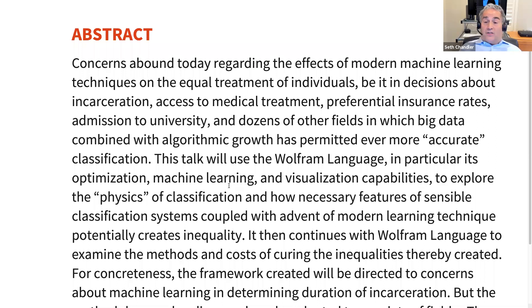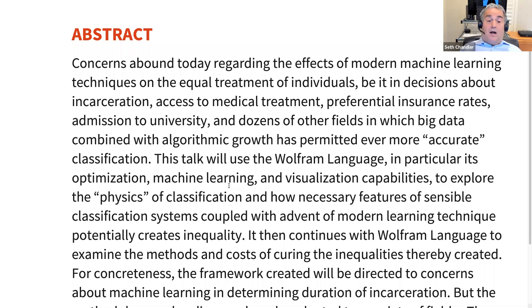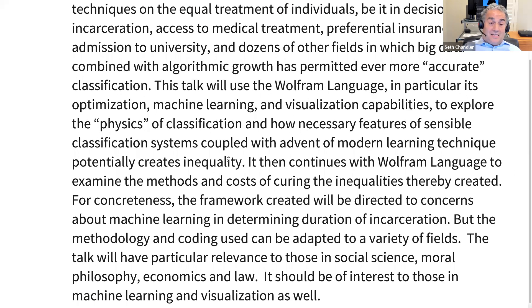We see decisions being made or influenced by machines with respect to incarceration, admission to university — that was a big topic in the UK recently. Basically, anytime you've got a machine or a person behaving like a machine making a decision, the issues I raise here are going to exist. I'm going to show how Wolfram Language, particularly optimization, machine learning, and visualization can help us understand what's going on and think about the advantages and disadvantages of trying to correct for inequalities created by machine learning systems.